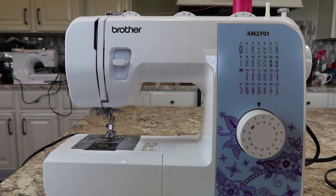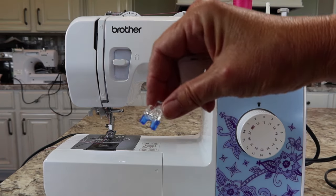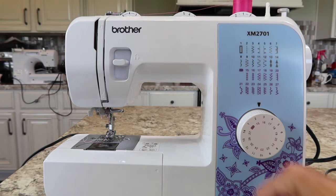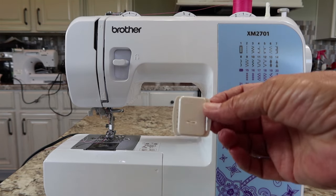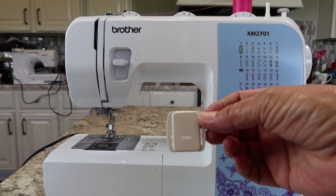So let's look at how to sew a button on by machine. Now you are going to need your button foot. It's the little foot that has the blue tip on it. You're also going to need your feed dog cover that looks like this.